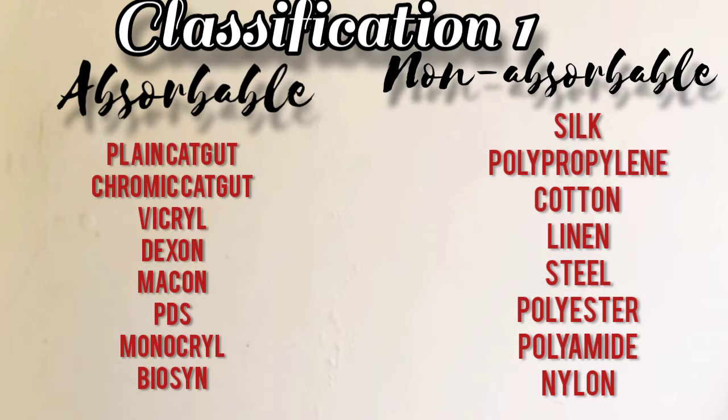Non-absorbable suture materials are silk, polypropylene, cotton, linen, steel, polyester, polyamide, and nylon.